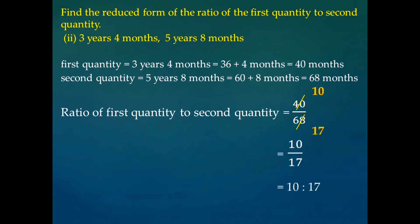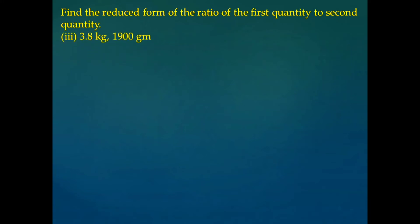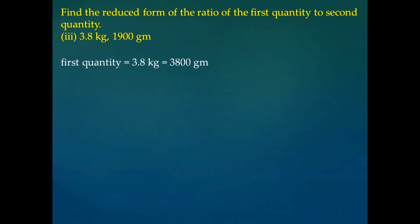Let us consider another problem: 3.8 kilograms and 1900 grams. In this problem also, the two quantities are not given in the same unit — the first quantity is given in kilograms and the second is given in grams. First of all, we have to express these two quantities in the same unit.